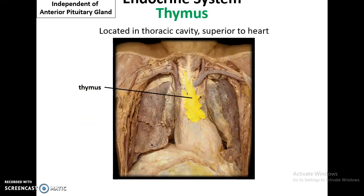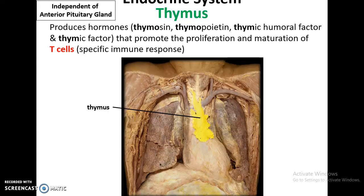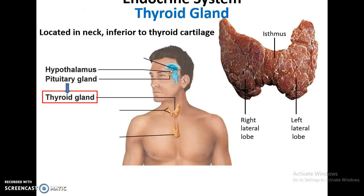The thymus, also independent of the anterior pituitary gland, is found in the thoracic cavity somewhat superior to the heart. It secretes various hormones — thymusin, thymopoietin, thymic humoral factor, etc. — that help to promote the proliferation and maturation of T-cells, which are important for immune response, our specific immune response.